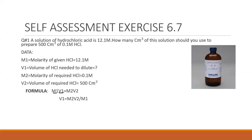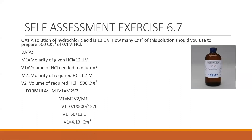V1 is the volume of stock solution required. M2 is the molarity of the new solution. V2 is the volume of the new solution. Rearranging: V1 = (M2 × V2) / M1. Substituting values: V1 = (0.1 × 500) / 12.1 = 50 / 12.1 = 4.13 cm³.